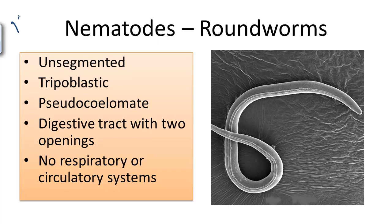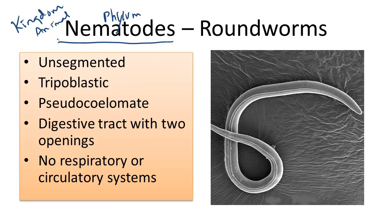One phylum in the animal kingdom contains roundworms. This phylum is called nematode. Nematodes can be characterized according to the following characteristics.